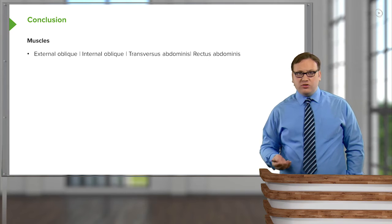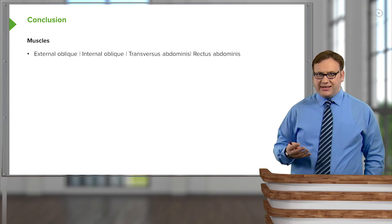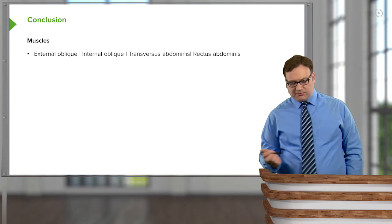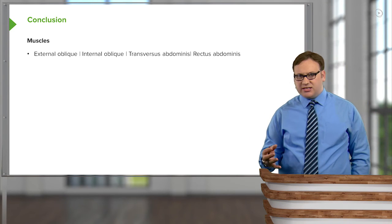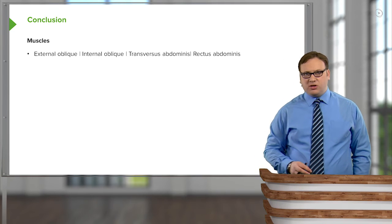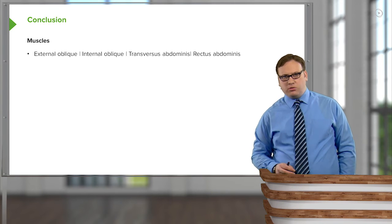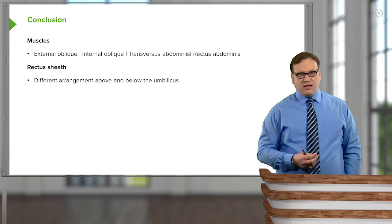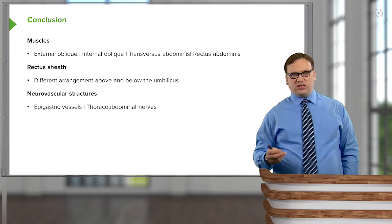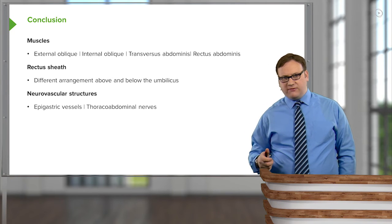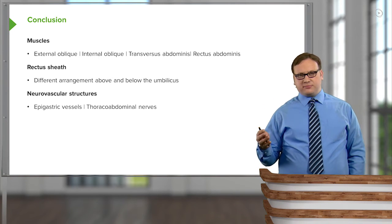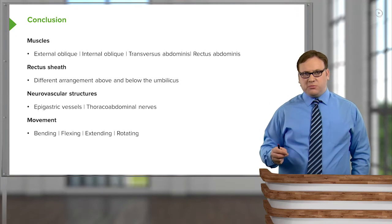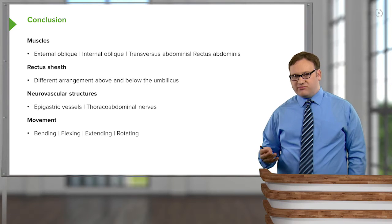In summary and conclusion, we've looked in quite a lot of detail at the origin, insertion, and innervation of a whole series of muscles: external obliques, internal obliques, transversus abdominis, and rectus abdominis. We covered how those muscles are arranged to form the rectus sheath, and towards the end we looked at the epigastric vessels — superior and inferior — and the thoraco-abdominal nerves that innervate them. Finally, we looked at movement: the bending, flexing, extending, and rotating of the trunk.